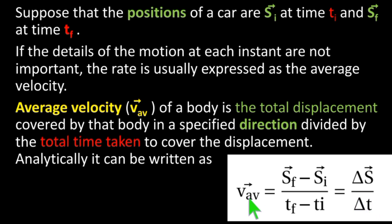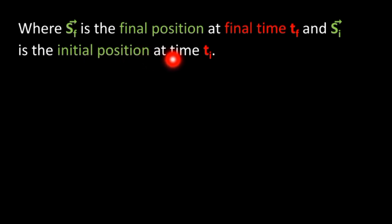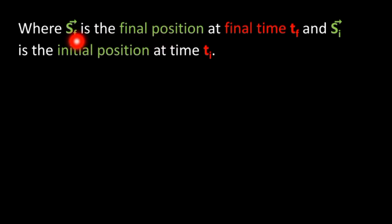The average velocity is equal to change in position or displacement over change in time. Where S_f is the final position at final time and S_i is the initial position at initial time.